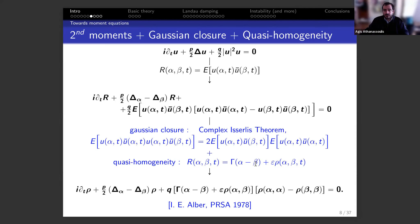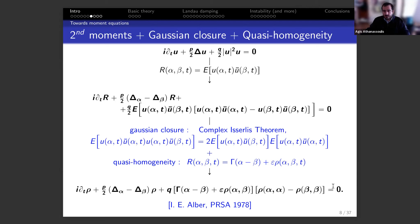The additional step is that the autocorrelation, to leading order, is stationary and homogeneous — depending only on the distance between positions α and β, not their exact locations. Higher order gives inhomogeneity. Plugging in, you get a closed equation for ρ (the inhomogeneity). This is what people usually call the Albert equation: the autocorrelation is known from measurements, and ρ is the inhomogeneity you're tracking.